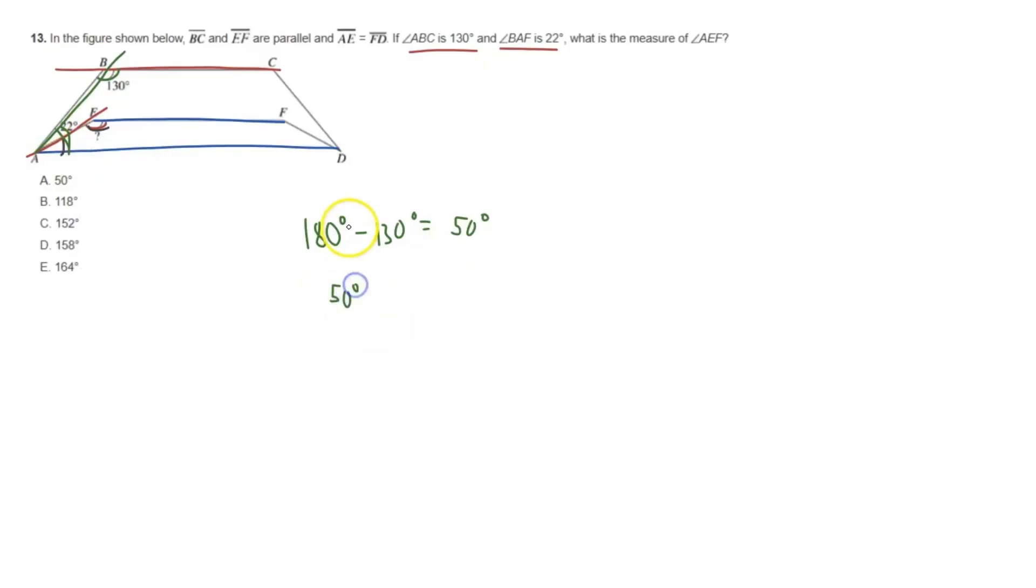And then we know originally that our angle of BAF is 22 degrees, so we can subtract 22 degrees away. And so that is going to leave us with 28 degrees. This 28 degrees right here is our angle EAD. So let me label that EAD. Cool.